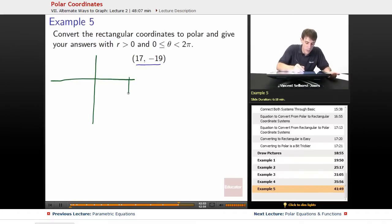So 17 would be out here, negative 19 would be down here, so this is a distance of 19. It is negative 19 as a coordinate, but we can also just treat it as being a distance of 19. Here is a distance of 17.